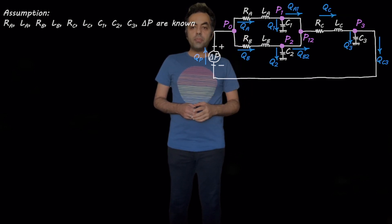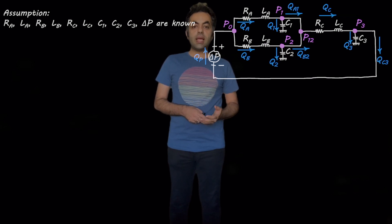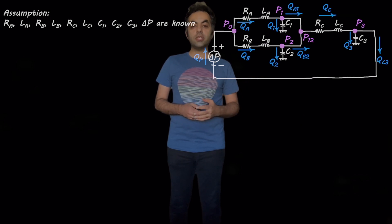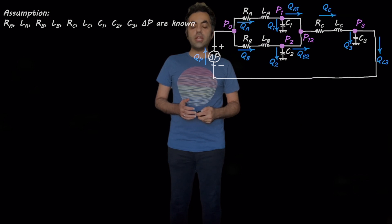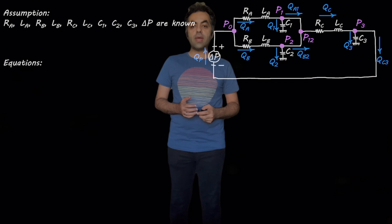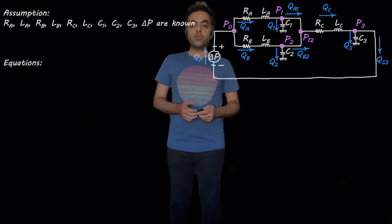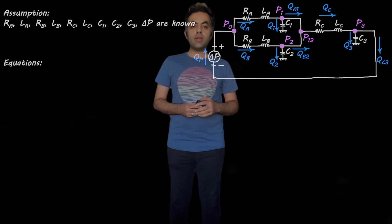In the circuit that we have here, RA, LA, RB, LB, RC, LC, C1, C2, C3, and delta P are now just similar to the circuit with two RLC compartments. So let's write the equations similar to those two other circuits that we previously had. We can write the pressure drop between point 0 and 1, between 0 and 2, and between 0.12 and 3.